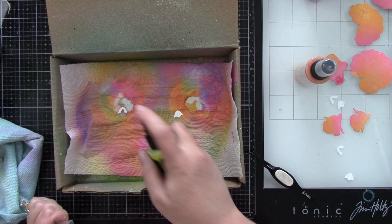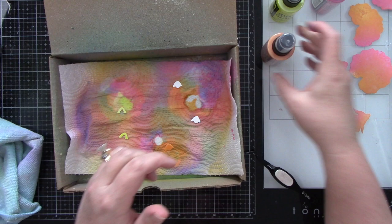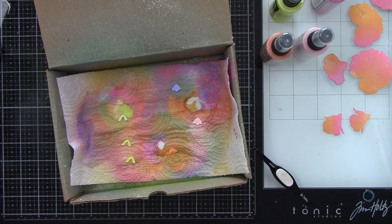Now here's the centers of all of the flowers. I am going to do the one little piece all with the Squeezed Lemonade, and then the other ones I will do the Shaded Lilac, the Spun Sugar, and the Spiced Marmalade.